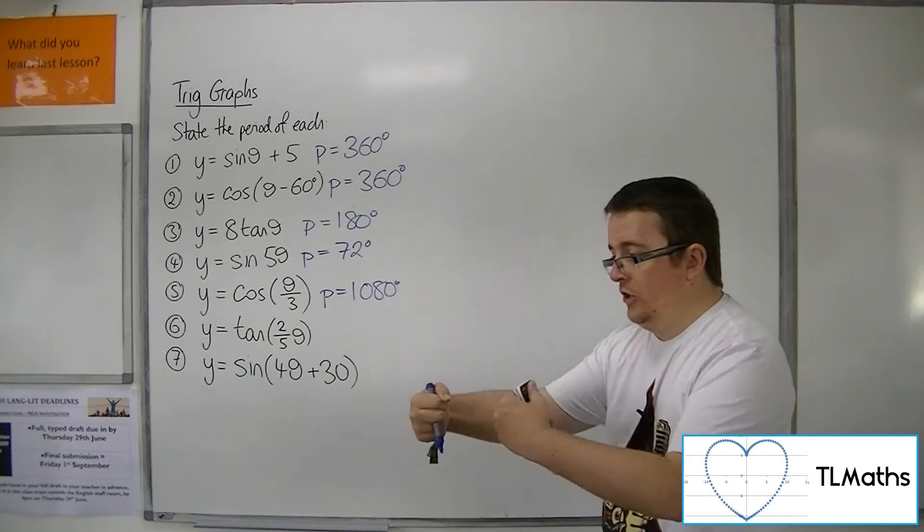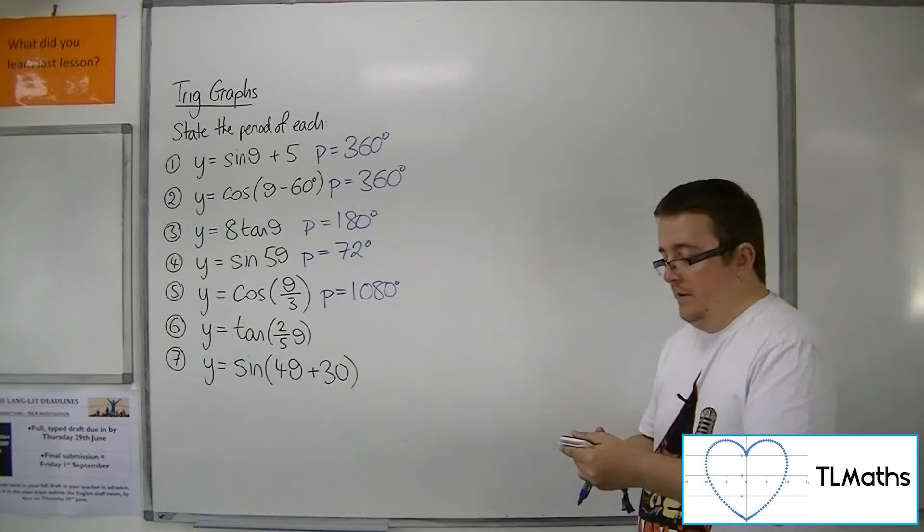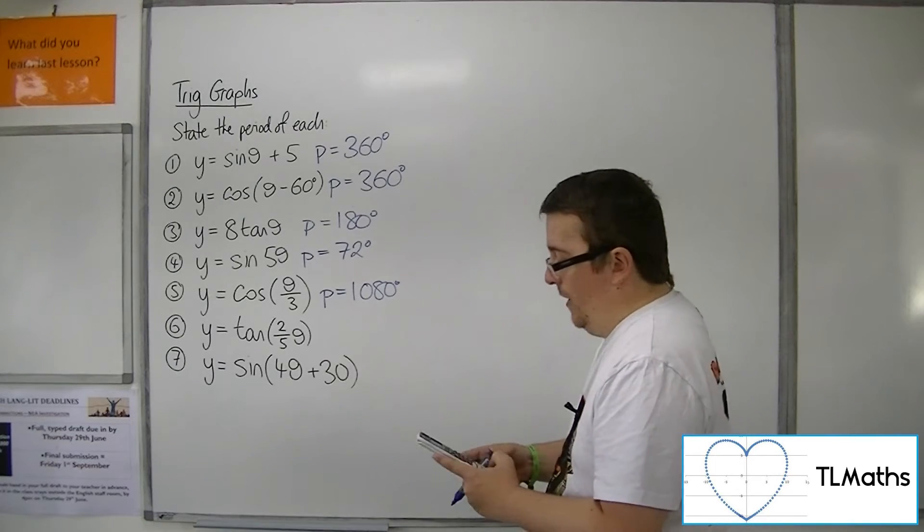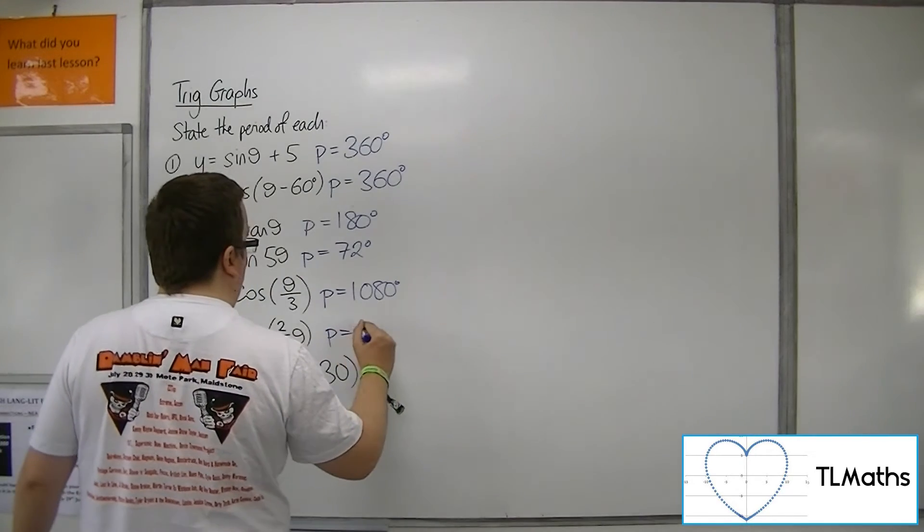So the tan curve is getting stretched out by a factor of 2.5. So five-halves times 180 makes 450 degrees.